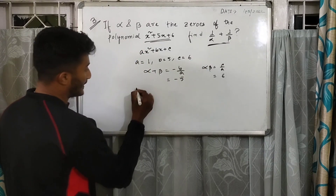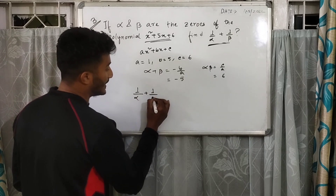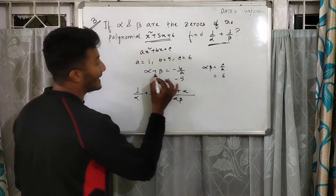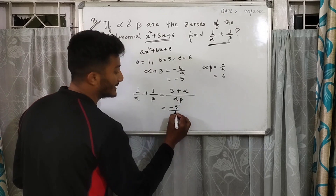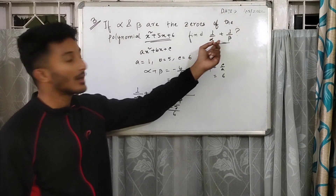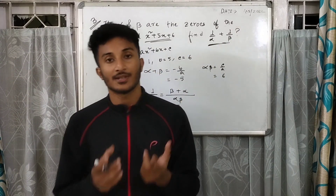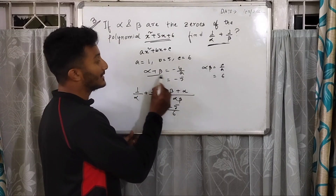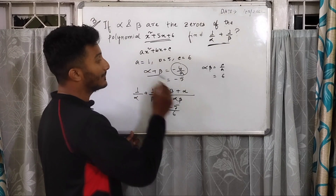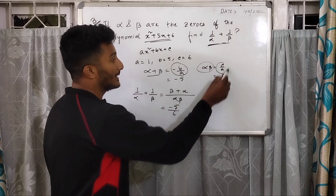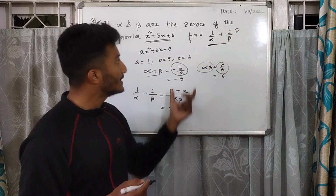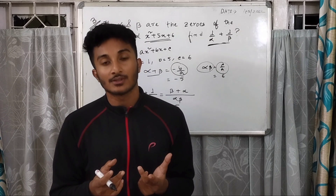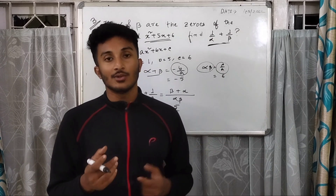We have to find 1/alpha + 1/beta. Taking the LCM of alpha and beta, it becomes (beta + alpha) / (alpha × beta), which equals (alpha + beta) / (alpha × beta) = −5/6. If your understanding of the sum of zeros, product of zeros, and their relation to the coefficients of the quadratic polynomial is clear, you can solve any such question. These types are very probable in MCQ and even in two-mark questions.